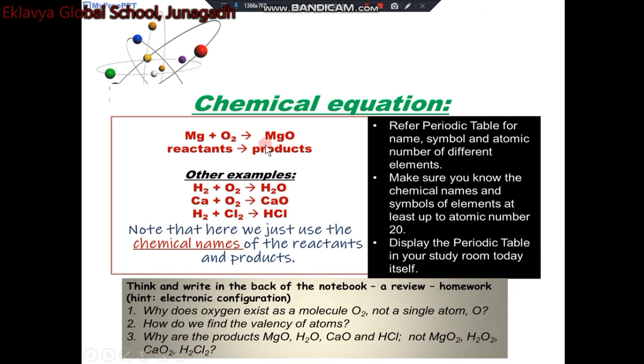How can we convert a word equation to chemical equation? By representing the elements and compounds using chemical formula. Examples are as follows: Magnesium plus oxygen gives magnesium oxide. Hydrogen plus oxygen gives water. Calcium plus oxygen gives calcium oxide. Hydrogen plus chlorine gives hydrogen chloride.